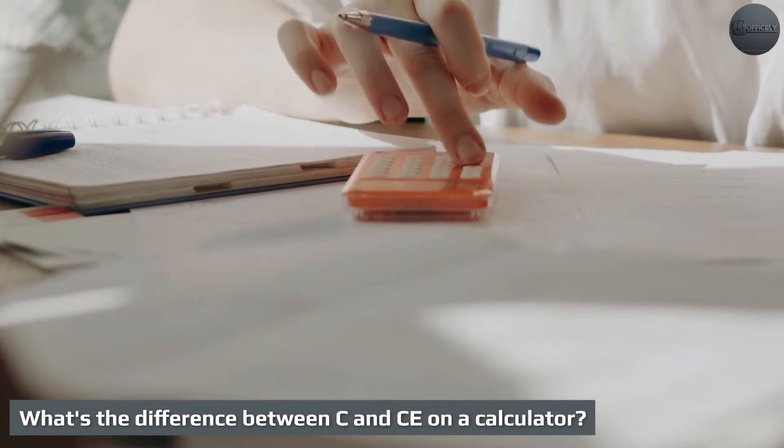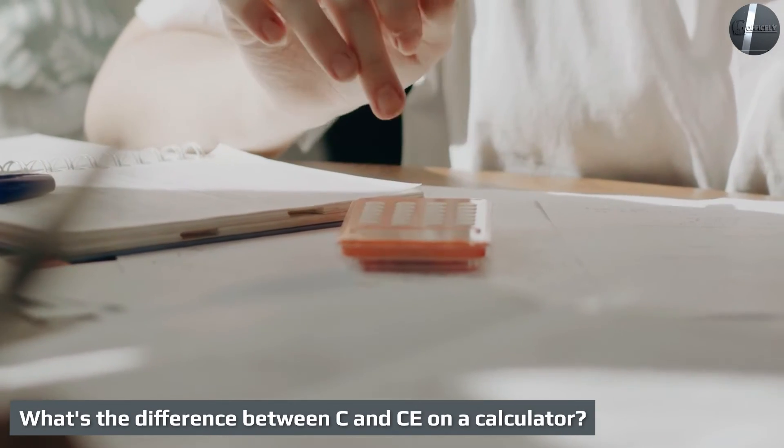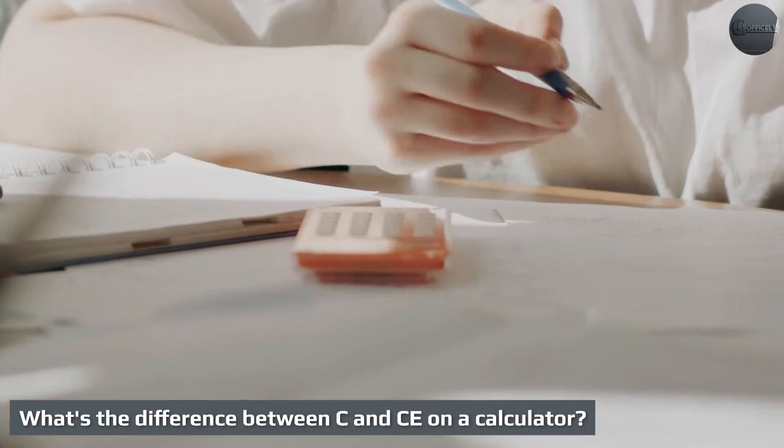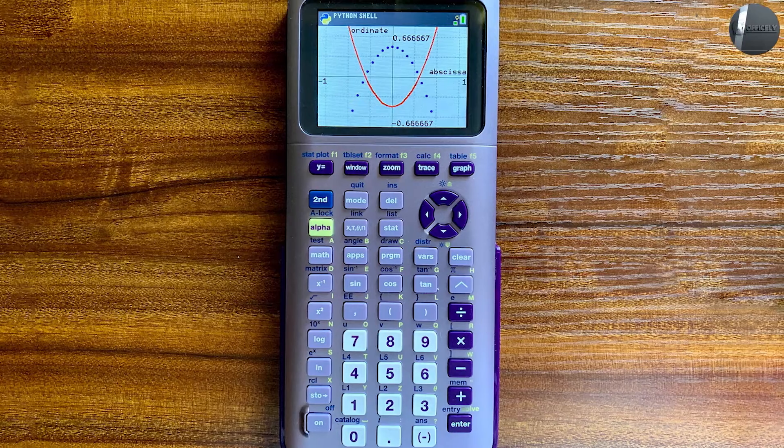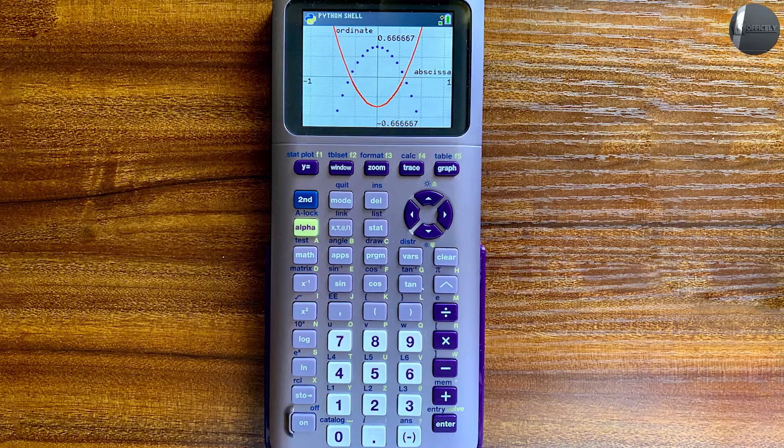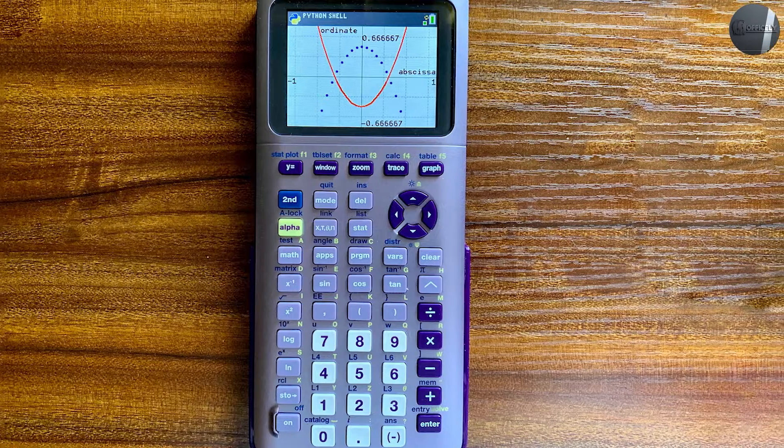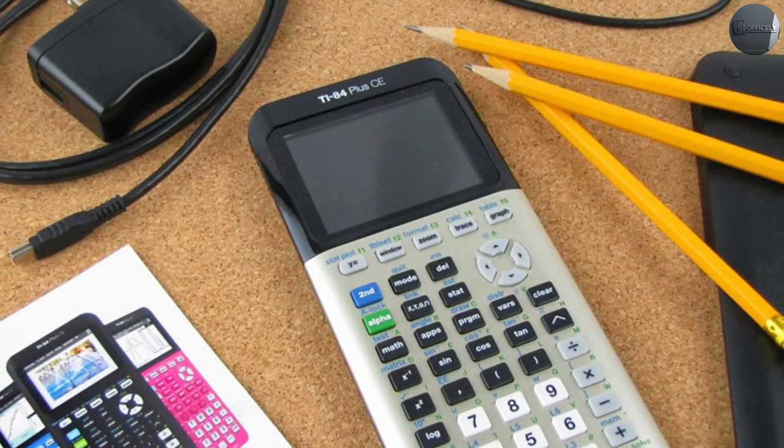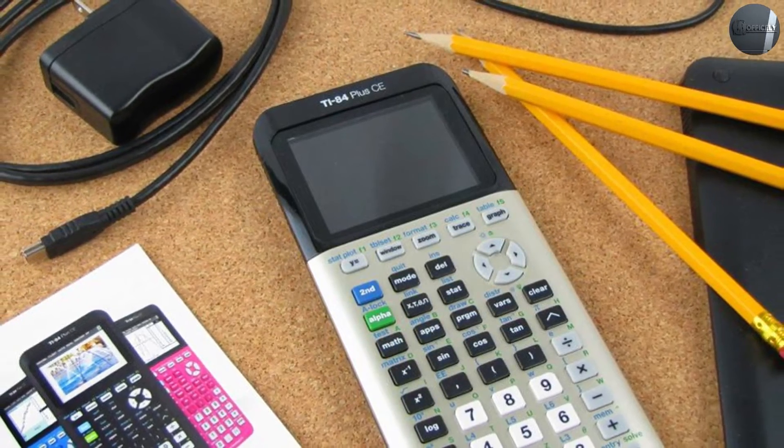What's the difference between C and CE on a calculator? Although both of these options clear the screen on a calculator, there is one main difference between them. CE stands for Clear Entry. For example, if you type the wrong number or symbol, you see CE, which is akin to a keyboard's backspace button, to get rid of what's on your screen.